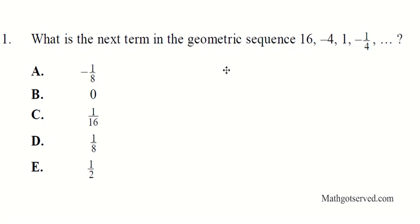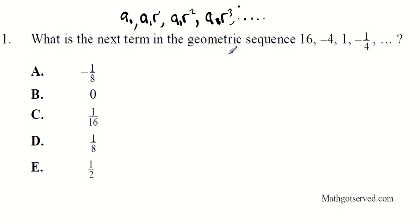This is the general form for writing a geometric sequence. Generally it can be expressed as a₁, then a₁ times r as a₂, then a₁ times r squared, then a₁ times r cubed, and so on. The whole idea behind a geometric sequence is that every time you multiply by a number called the common ratio.